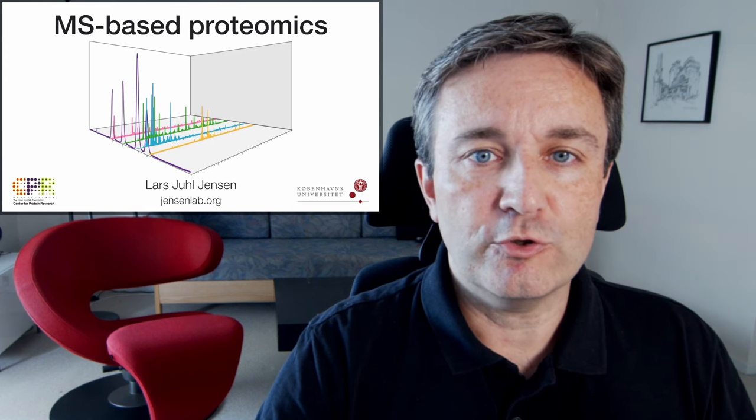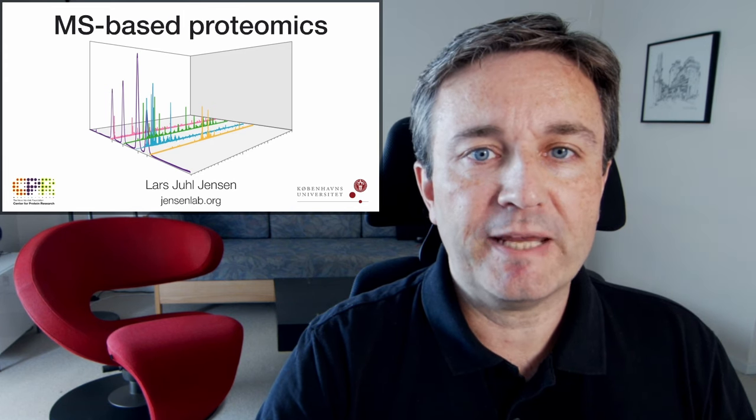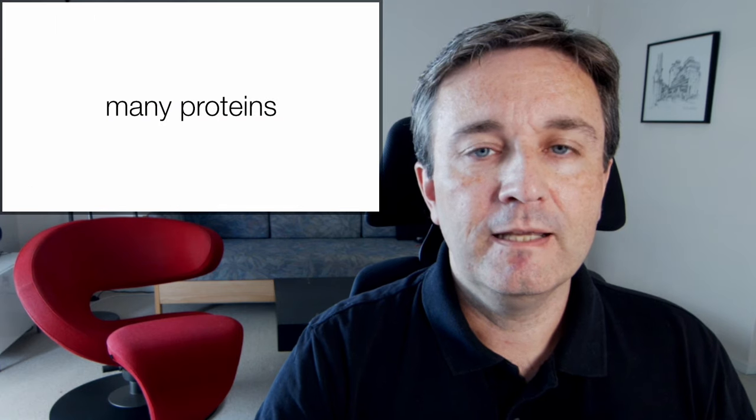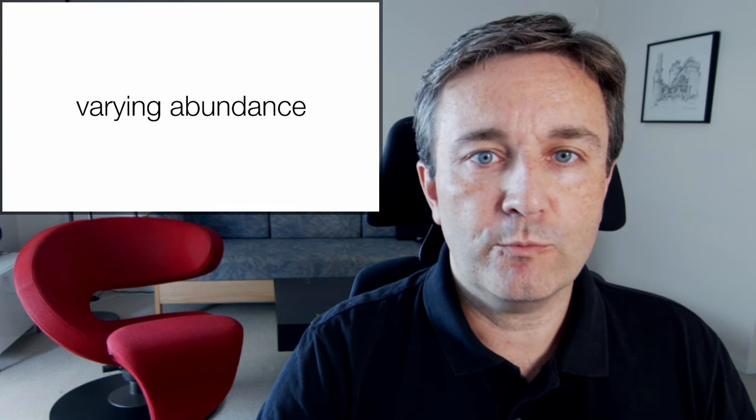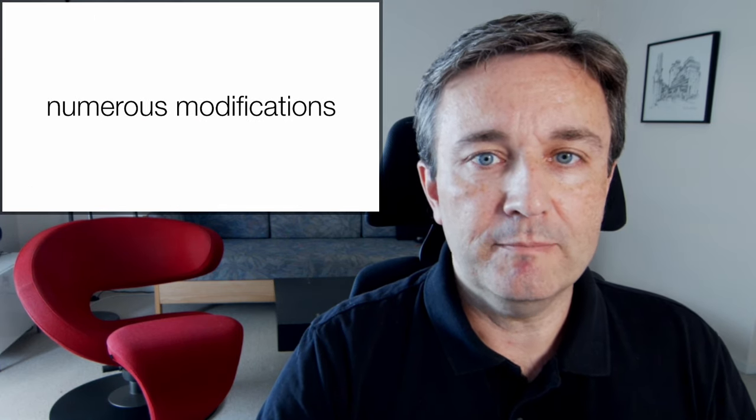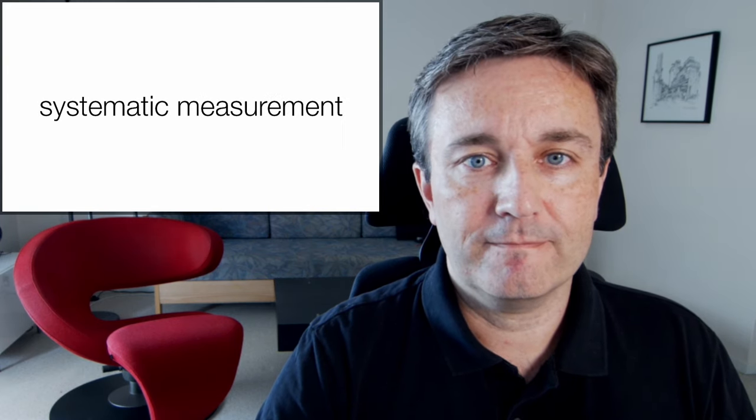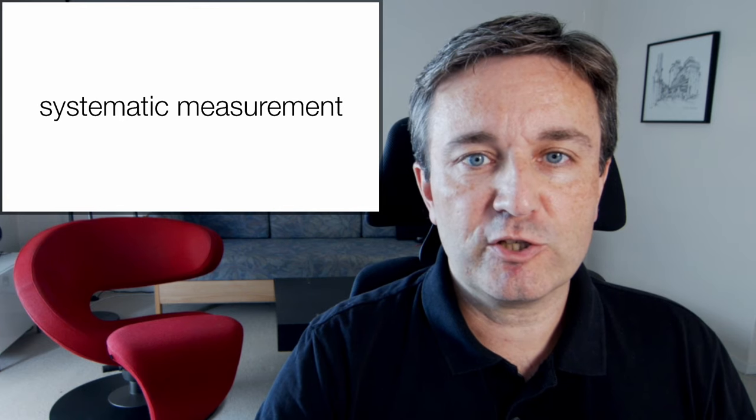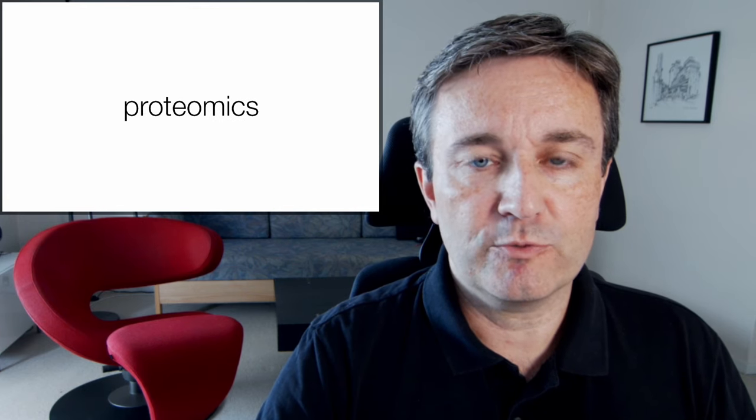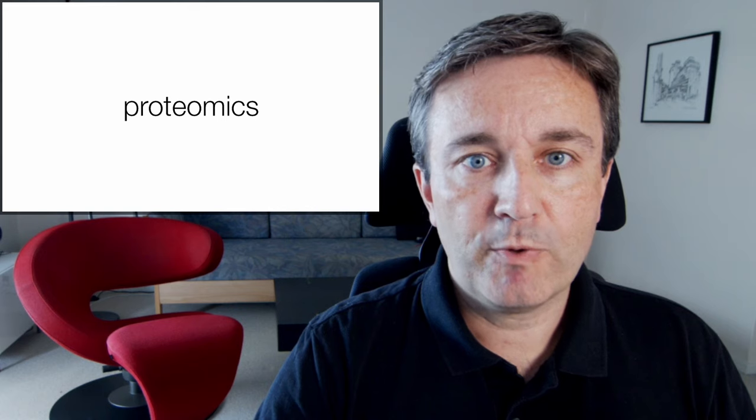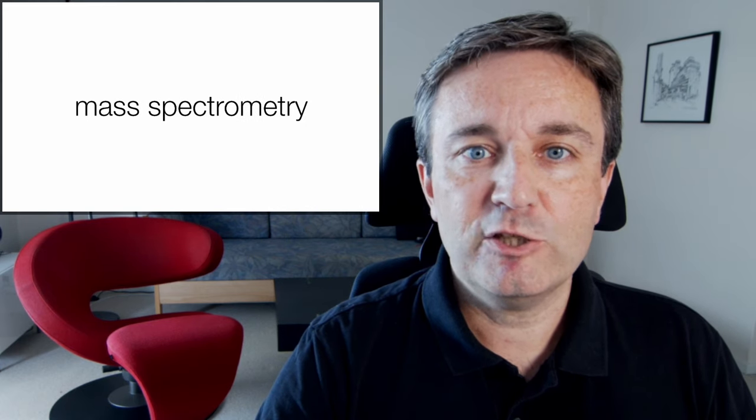Welcome to this short introduction to the core concept of mass spectrometry-based proteomics. A cell consists of many proteins which can have varying abundance, be modified in numerous different ways, and make up many different protein complexes. The systematic measurement of all of this is what is known as proteomics, and the most popular technique for doing it is mass spectrometry.